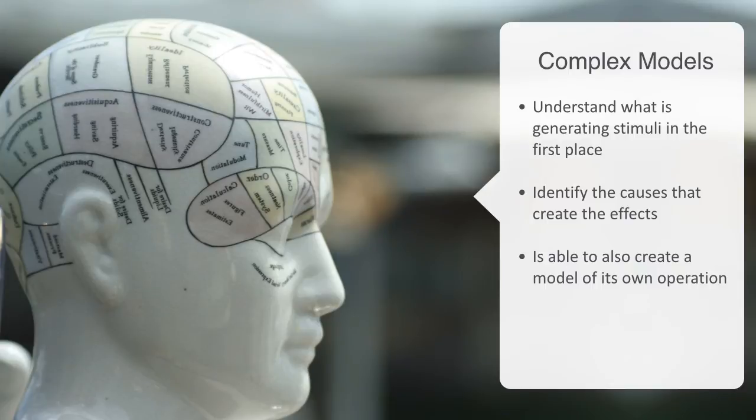For example, we might be able to identify that every time we get stressed, we start smoking and then try to alter this reaction. This somewhat self-referential capacity for a system to model and analyze its own regulatory system is the subject of what is called second order or new cybernetics.